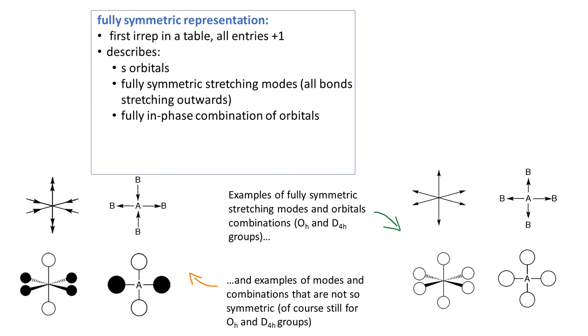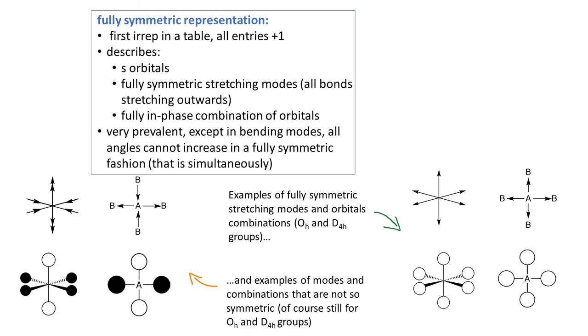Just so we can compare, here are some examples of stretches or combinations of orbitals that are not so fully symmetric. Fully symmetric representation is very prevalent, except in bending modes. So let's look for instance at this D4H molecule. We can immediately see that all four angles cannot increase at the same time, so this is invalid solution for this type of problems.